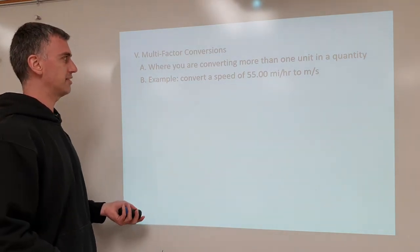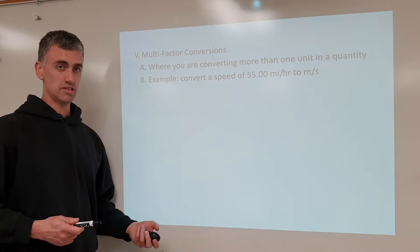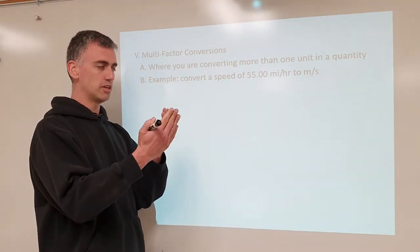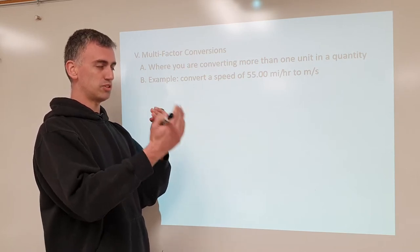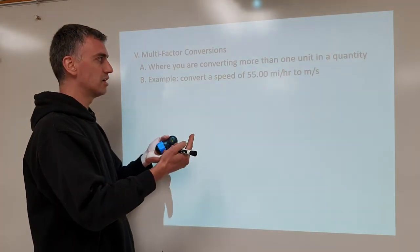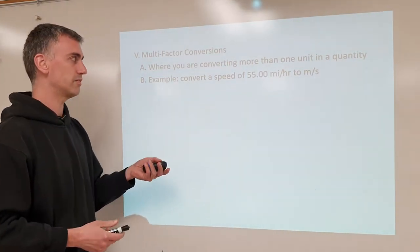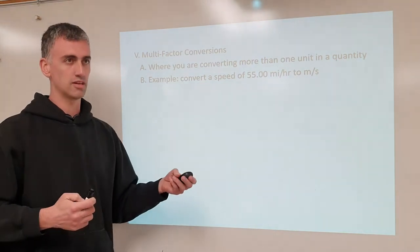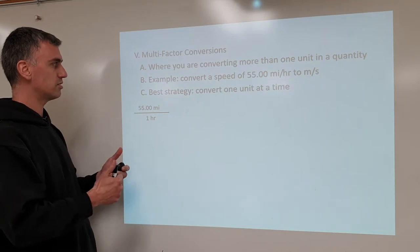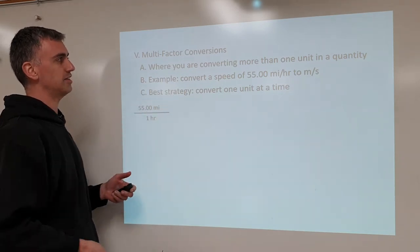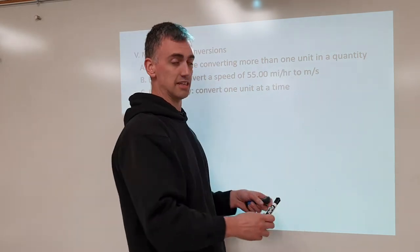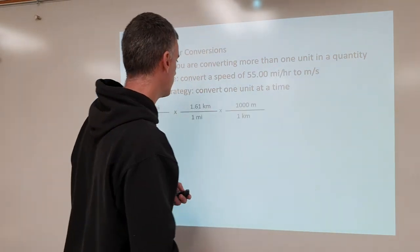So look at this example right here. 55 miles an hour to meters per second. Okay, look, you're converting not just from miles to meters but from hours to seconds. You have multiple conversions going on at once here. So how do you handle that?